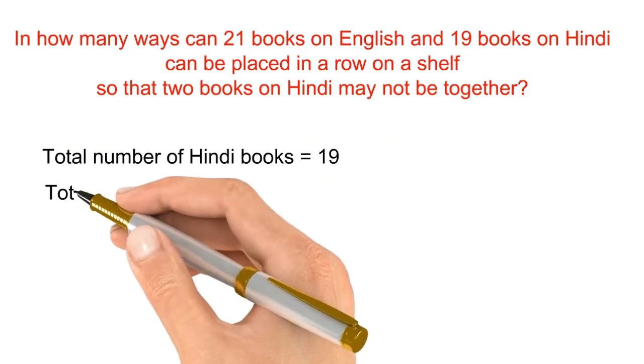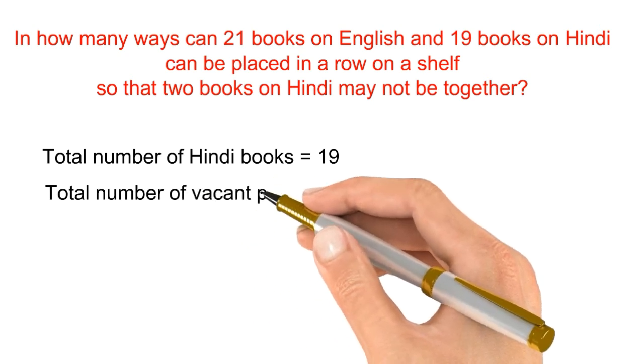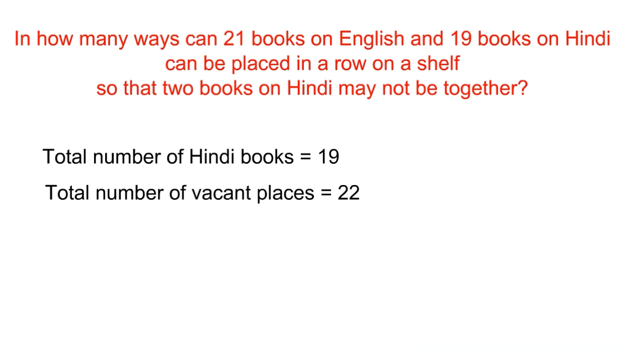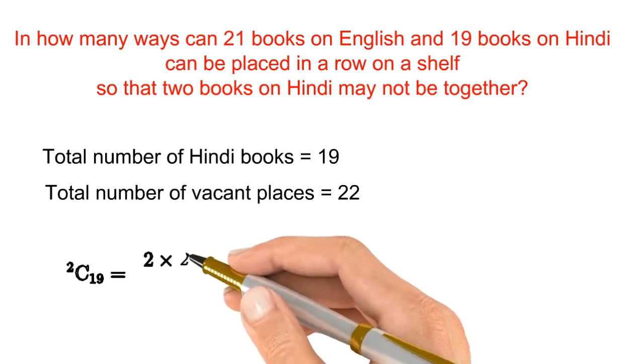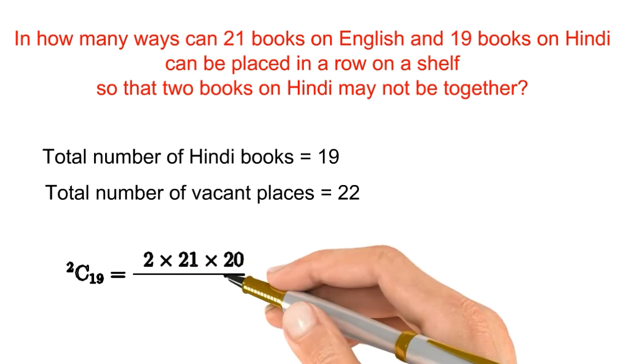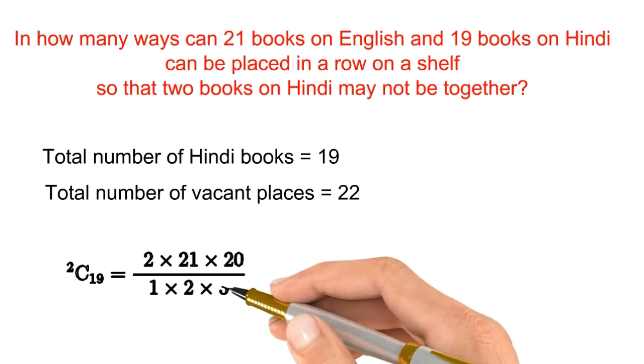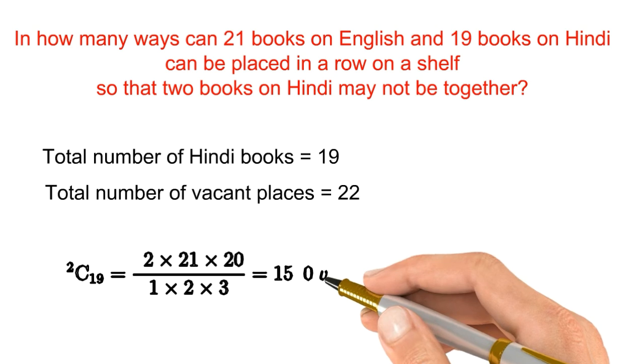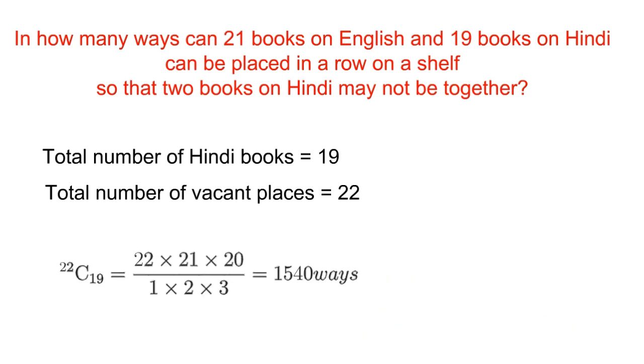The total number of Hindi books is 19. There are 21 English books. When you arrange these, you will have 22 vacant places. The total is 22. We have only 19 Hindi books. Thus, the formula is 22C19. I am ready to solve it this way. Thank you.